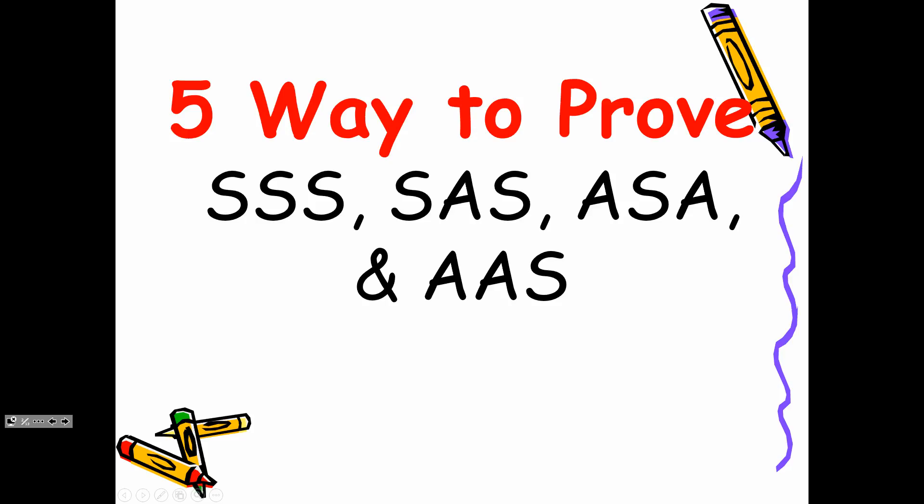Then we have SAS — a side, angle, side. You see how the A is in between the two S's? That means the angle is included with the sides. And then we have Angle-Side-Angle — the side is in between the A's. Then this one, AAS, is where it's non-included. I'm going to show you examples of all those.